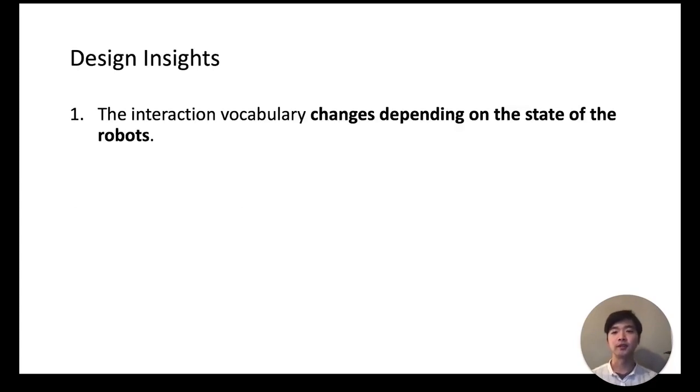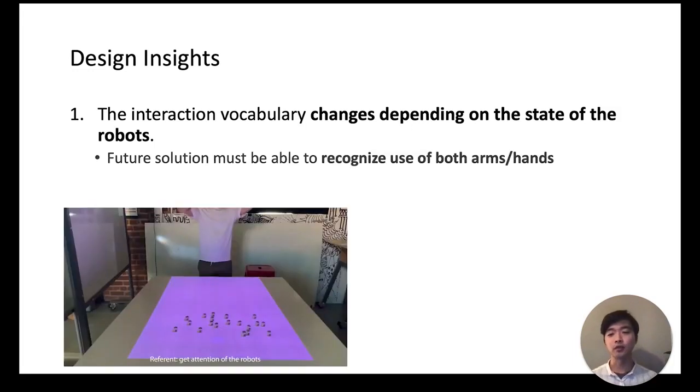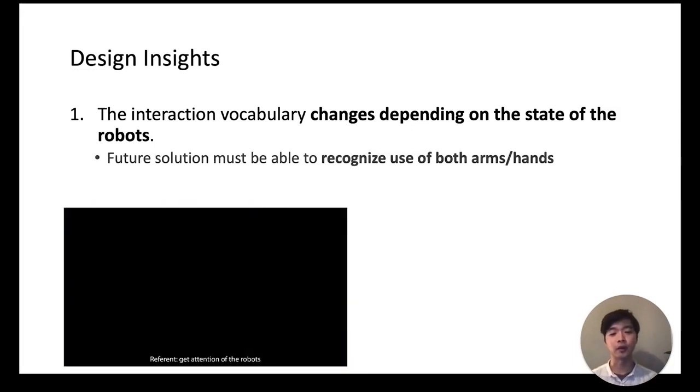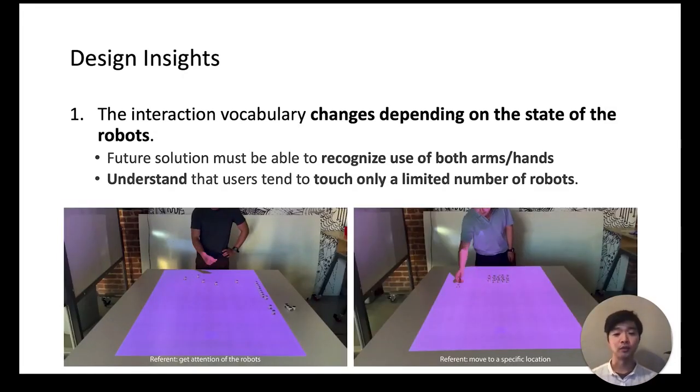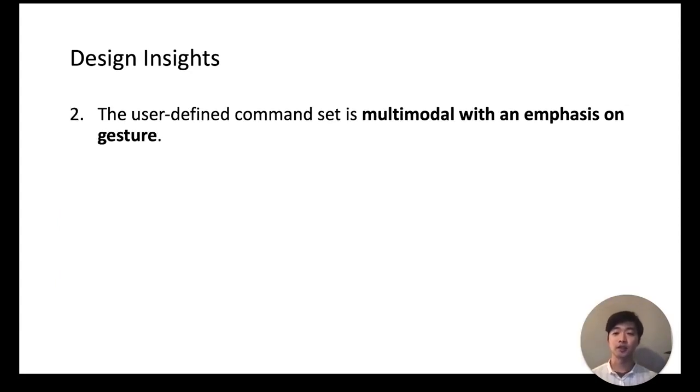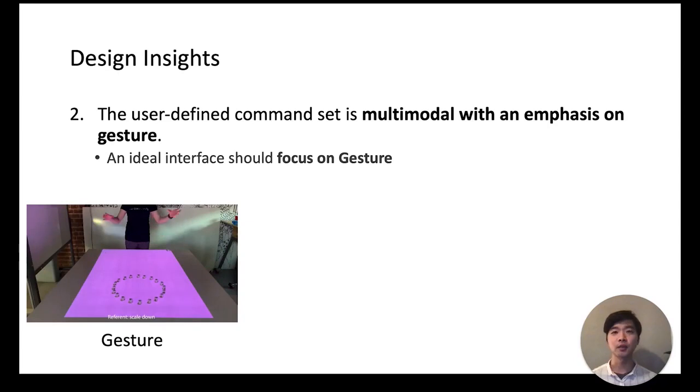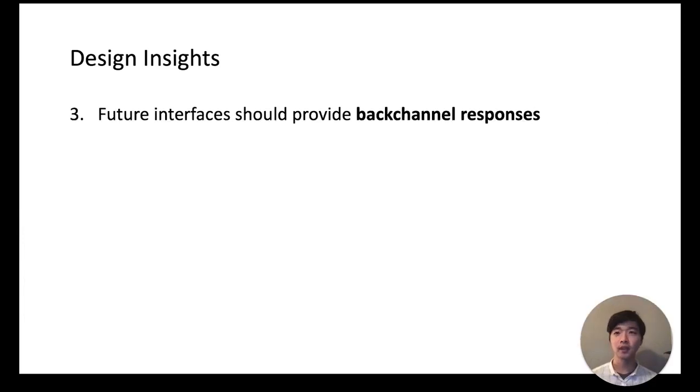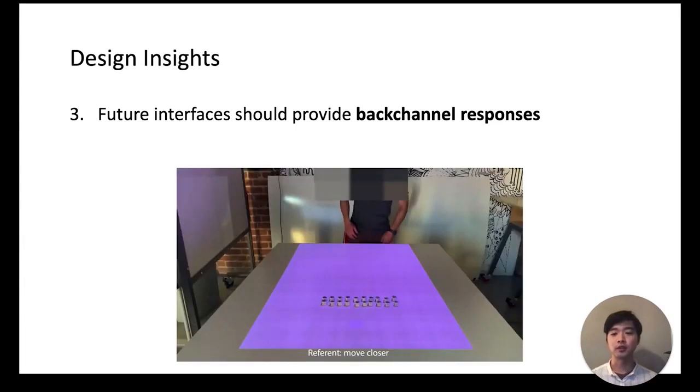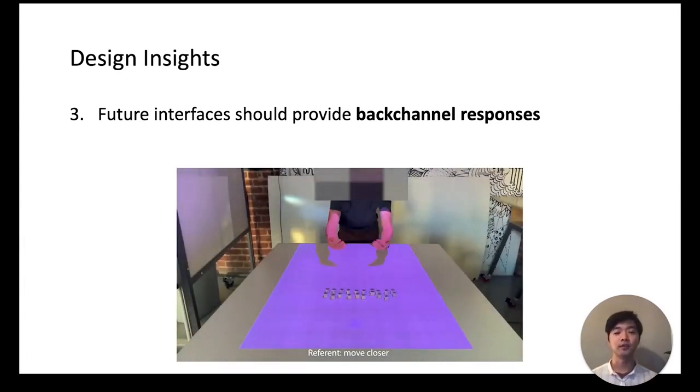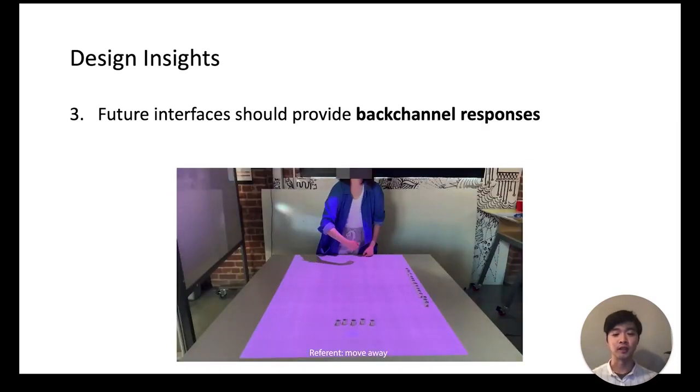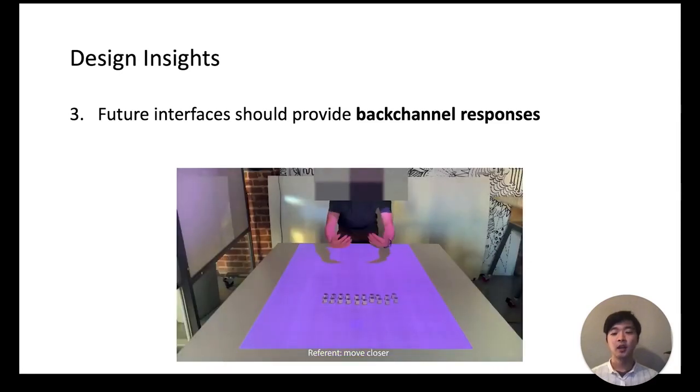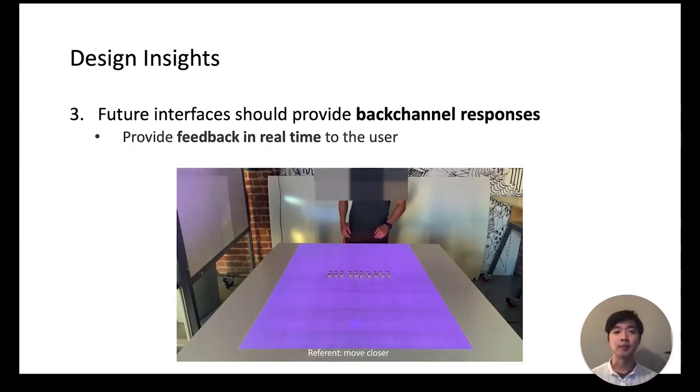From the elicitation study we compiled the following design insights. First, the interaction vocabulary is dynamic and it changes based on the state of the robots, so future solutions must be able to recognize use of both arms or hands. You should also understand that users tend to touch only up to a limited number of robots. The user-defined command set is multimodal but with an emphasis on gesture, so an ideal interface should first focus on gesture recognition but should still detect multimodal inputs as it would provide flexibility to users in different scenarios. Lastly, future interfaces should provide back channeling responses. We observed numerous instances where participants were unsure if their commands were being properly understood, so you can see them repeating their commands until they're satisfied. It's important to provide this feedback in real time to the user either by overlaying visual output through AR-like systems or through haptic feedback.